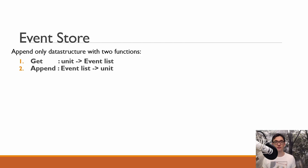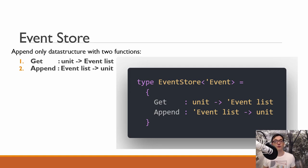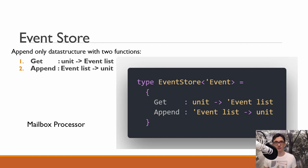In F# it's pretty easy to implement this type. We have a type called event store for some generic event — that's why there is the generic type parameter — and this is just a record with two functions: get and append. Now the question is how do we actually implement this event store. For this we use a nice thing that F# provides us, which is a mailbox processor or an agent. To explain how a mailbox processor works if you've never used them, I'm going to draw you a small diagram.